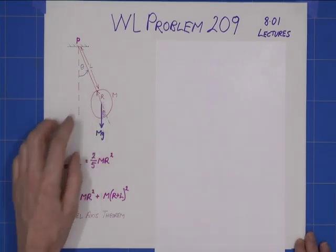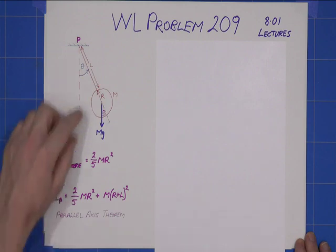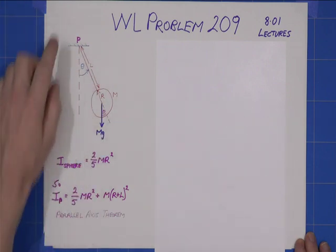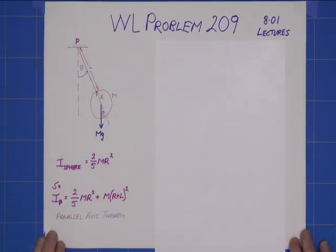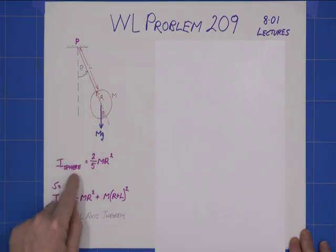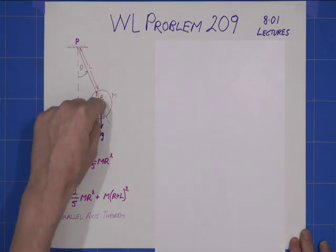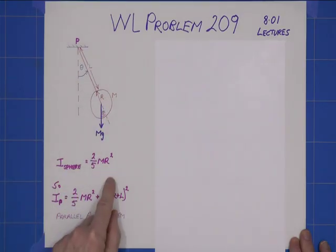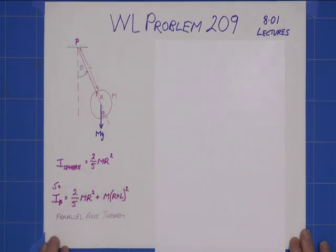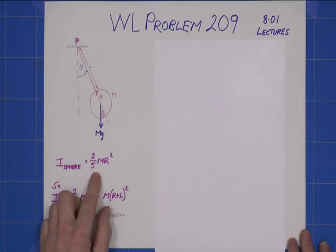Solid sphere, radius r, mass m, acting as a pendulum attached with a massless string. For the sphere, the moment of inertia about its own center of mass, we can either look up or calculate, if you feel like it, it's this value here.